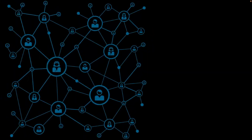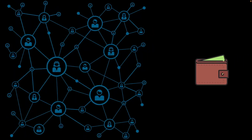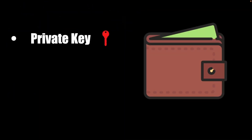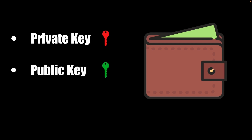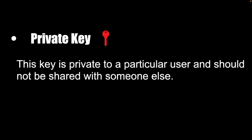When you become part of the blockchain, you are provided with a wallet. This wallet is used for making transactions on the blockchain. It is a virtual wallet and it contains two types of keys — one is the private key and the other is the public key. The private key, as the name specifies, is to be kept secret and not shared with anyone else. This private key is used for digitally signing transactions on your behalf.